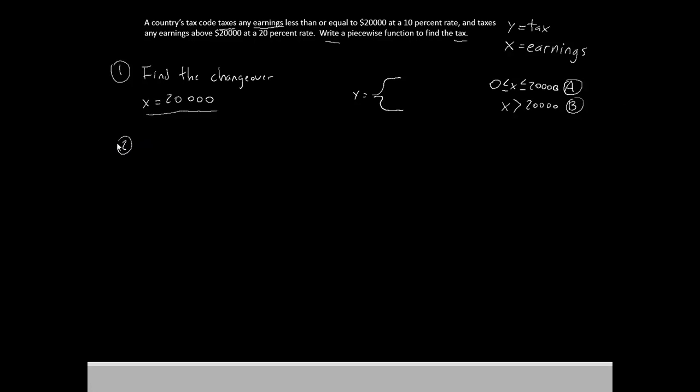Now that we know the changeover, our second step is going to be to find the first equation for piece A. Well, let's start from the general form: y = m(x - x₁) + y₁. So it says that for A, in between zero and $20,000, we have a 10% rate. So our m is 0.1. Now, we don't have an x₁ or a y₁ mentioned in this problem, because they don't say anything about an initial value. So both of them will be zero. We'll have x minus zero, plus zero. Or in simpler form, y = 0.1x. We'll go ahead and put that right here in our piecewise function.